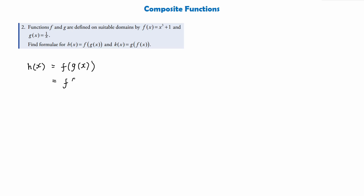We say h of x equals f of g of x. We're finding f of 1 over x since g of x is 1 over x, which is going to be 1 over x all cubed plus 1. This would be fine to leave as this, but if you were to expand it you'd get 1 over x cubed plus 1. Either form is acceptable, and remember this is the function h of x.